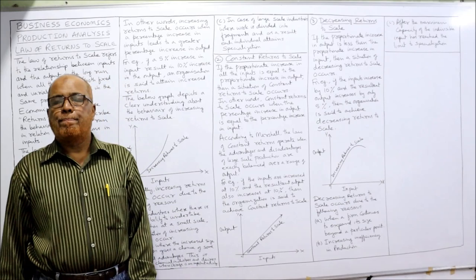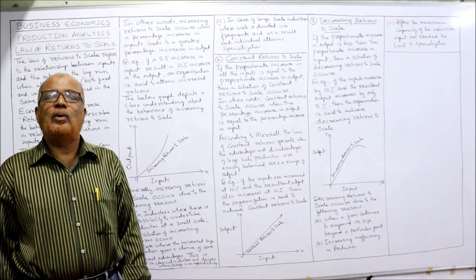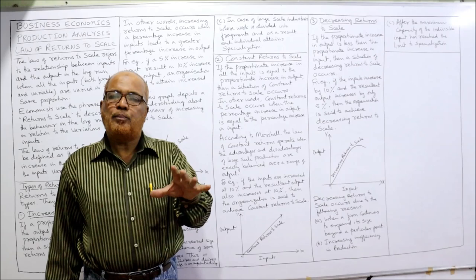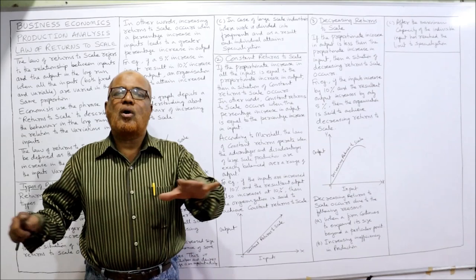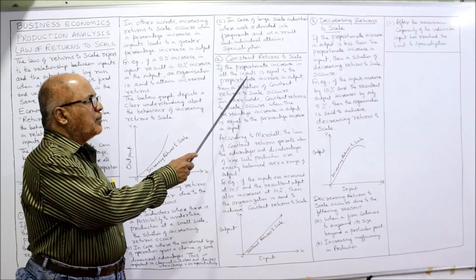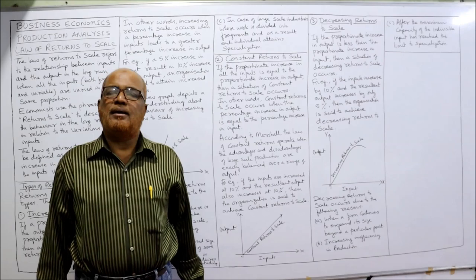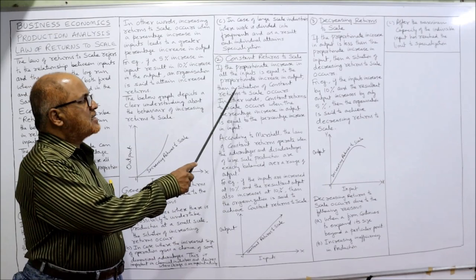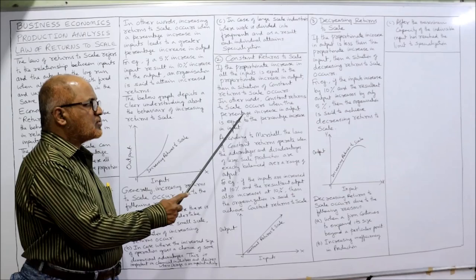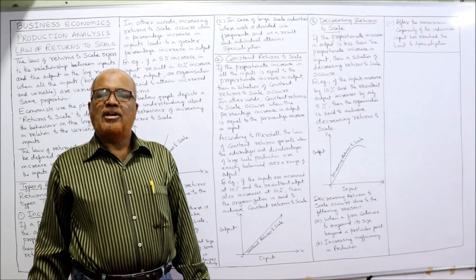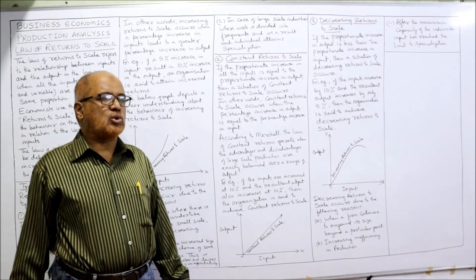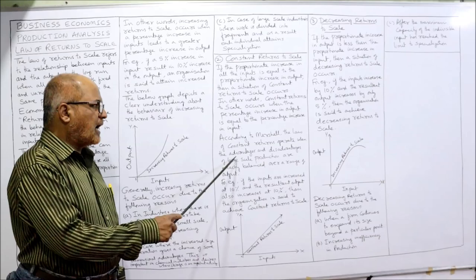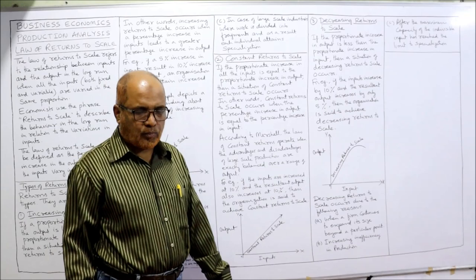The second type is constant returns to scale. This means the percentage change in input and the percentage change in output are equal. If there is a 10% increase in inputs leading to a 10% increase in output, it is called constant returns to scale. If the proportionate increase in all inputs equals the proportionate increase in output — both percentages the same — then the situation of constant returns to scale occurs.